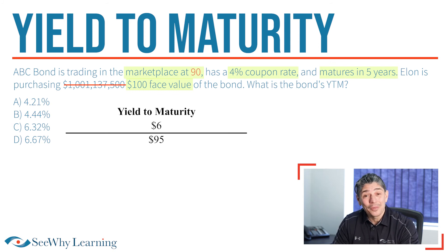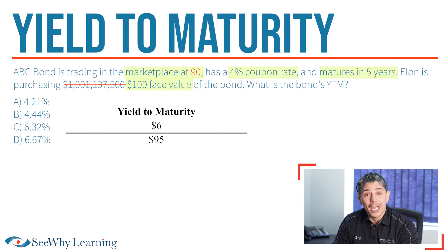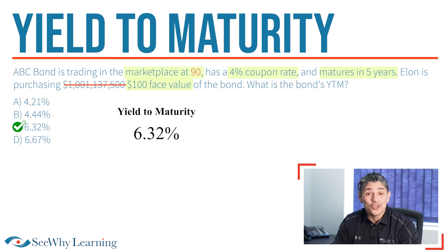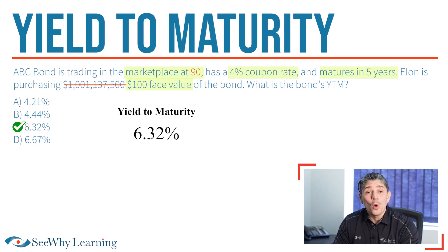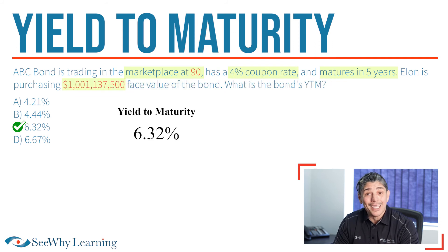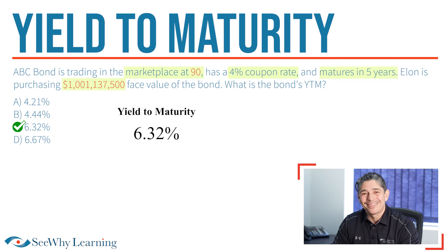Finally, we divide $6 by $95 and get a YTM of approximately 6.32%. And I promise you, if you do the same calculation with a much larger bond — even a billion dollar face value bond like Elon's — your yield as a percentage will be the same.